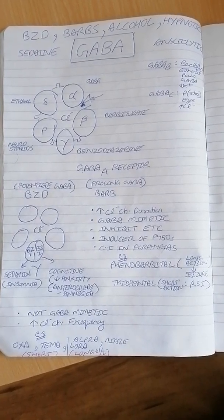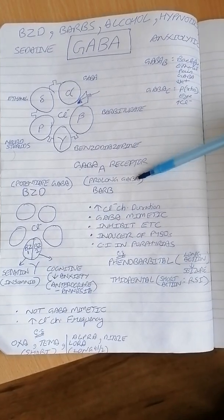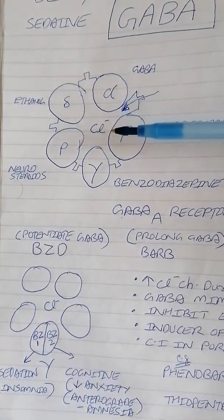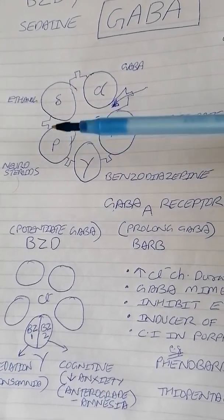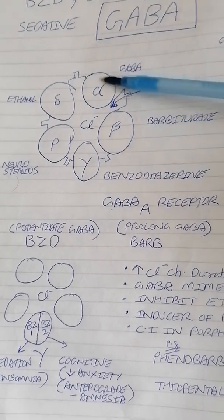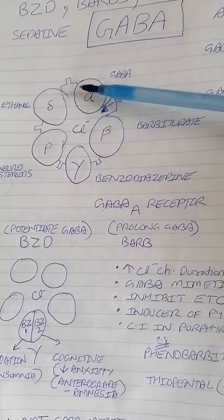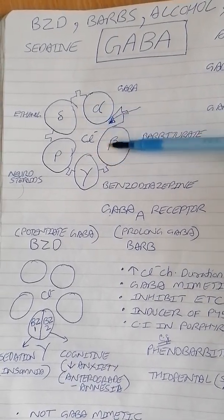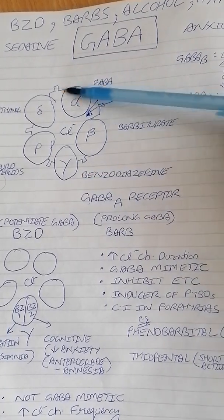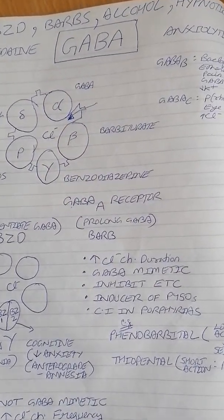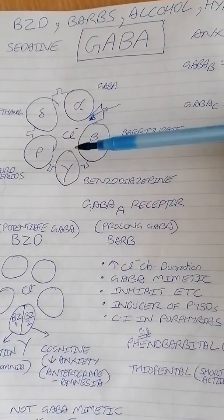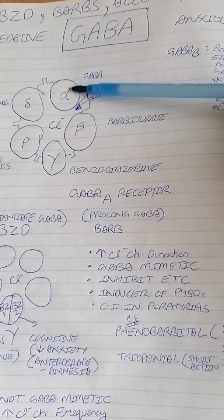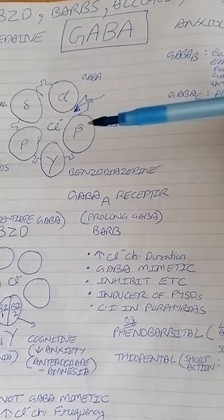The GABA-A receptor, as you can see in the diagram, has a few subunits: alpha, beta, gamma, rho, and delta — five subunits in total. Because it has five subunits, GABA-A can also be named the GABA-A complex. This GABA-A receptor is present at many places in your brain.